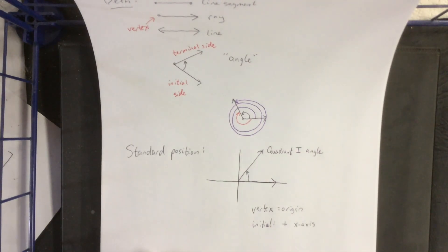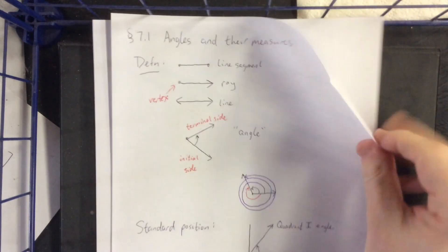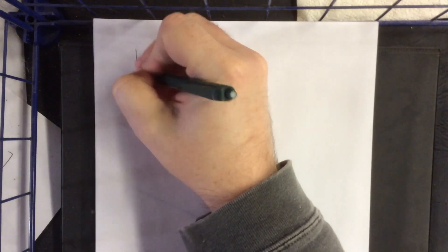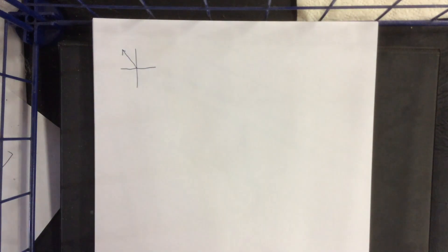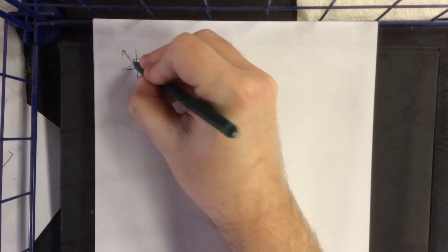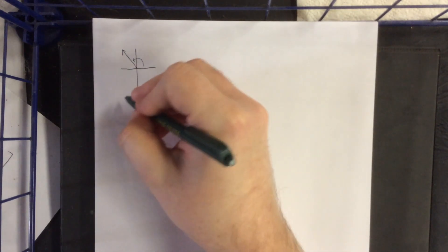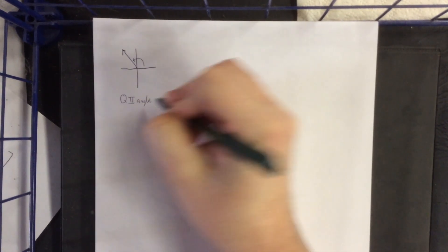We would also make ourselves a quadrant 2 angle, a quadrant 3 angle, or a quadrant 4 angle by putting our terminal side in the appropriate quadrants. Let's go ahead and do that right now. So, without even writing where the initial side is, I'm going to put a terminal side in quadrant 2. This would be considered to be a quadrant 2 angle. We'll use Q for quadrant.